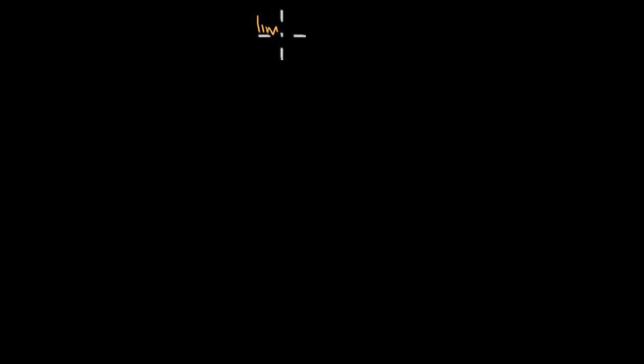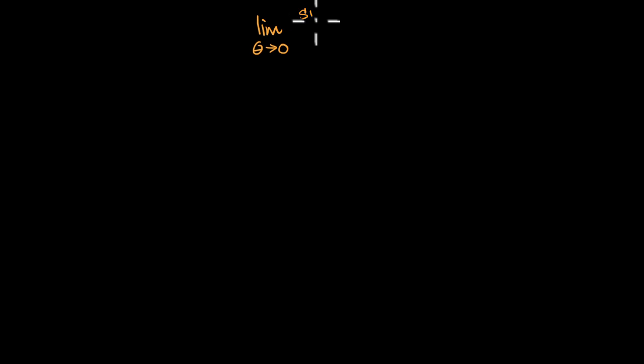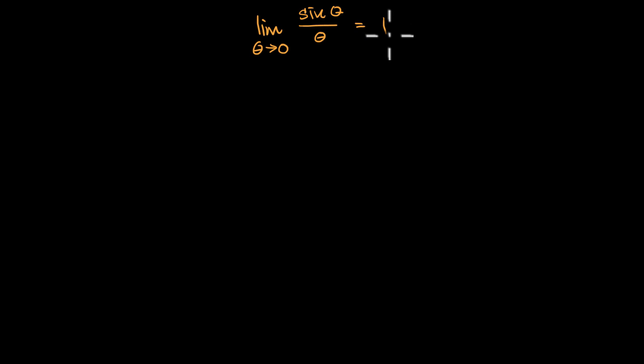What we're going to do in this video is prove that the limit as theta approaches zero of sine of theta over theta is equal to one.